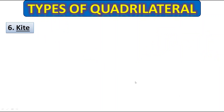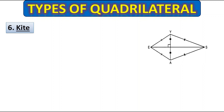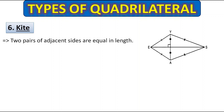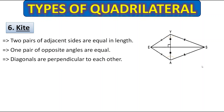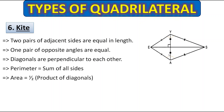The next type of quadrilateral is the kite. The properties are: two pairs of adjacent sides are equal in length — this side and this adjacent side are equal, and the other pair of adjacent sides are also equal. One pair of opposite angles are equal — this pair is equal but not the other. Diagonals are perpendicular to each other. To find the perimeter, add all four sides. To find the area, multiply the two diagonals together and halve the result.